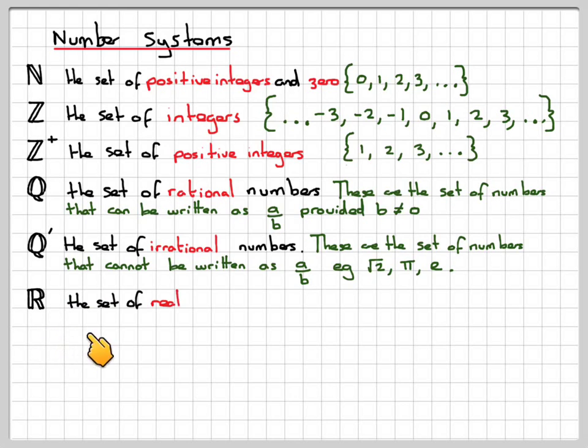The set of real numbers is all the numbers. It's all the irrational, rational, and all these other ones because of the subsets. The set of irrational numbers and rational numbers make up the set of real numbers.